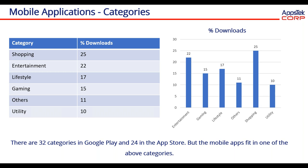Looking at the percentage of mobile applications by categories, based on downloads available on the Apple App Store and Google Play Store: shopping apps constitute 25% of the total, followed by entertainment at 22%, lifestyle apps at 17%, gaming at 15%, utility at 10%, and others at 11%. Google has 32 categories and Apple has 24 categories used when applications are deployed.